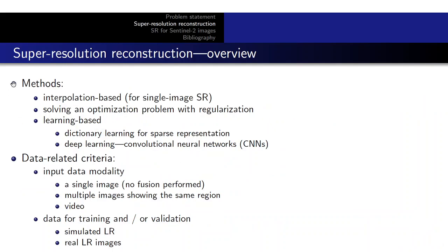There have been a number of methods developed for super-resolution reconstruction. The simplest ones are based on interpolation for single image super-resolution. Some of them are based on solving an optimization problem with some regularization imposed. And finally, there are a bunch of techniques based on learning — implemented using dictionary learning for sparse representation — and nowadays most methods are based on deep learning that exploits convolutional neural networks.